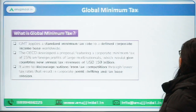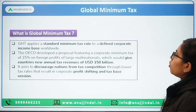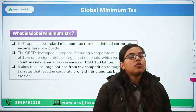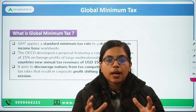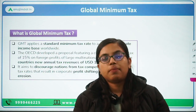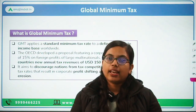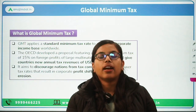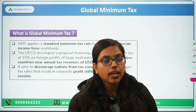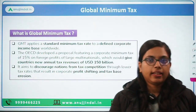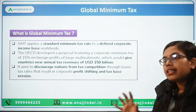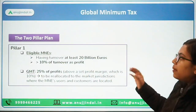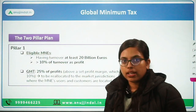Now let's talk about what this global minimum tax is. A 15% minimum tax will be collected from MNCs and this tax will be redistributed to economies from where those companies get their business. This global minimum tax has two pillars — pillar one and pillar two.